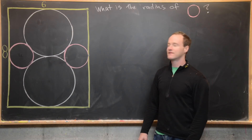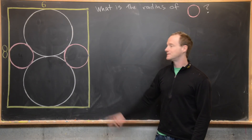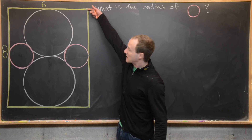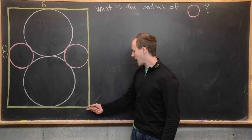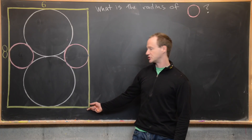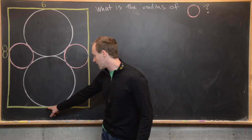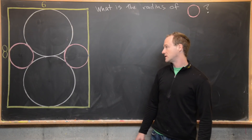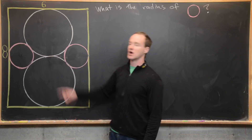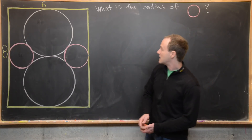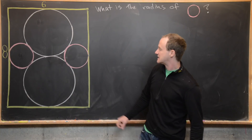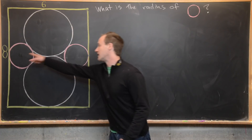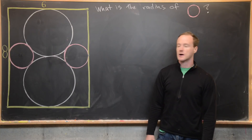Inside the rectangle we've got four circles. The two white circles are tangent to the top and bottom line segments of the rectangle at their midpoint, and they are also tangent to each other. The pink circles are tangent to the two white circles and each side of the rectangle.